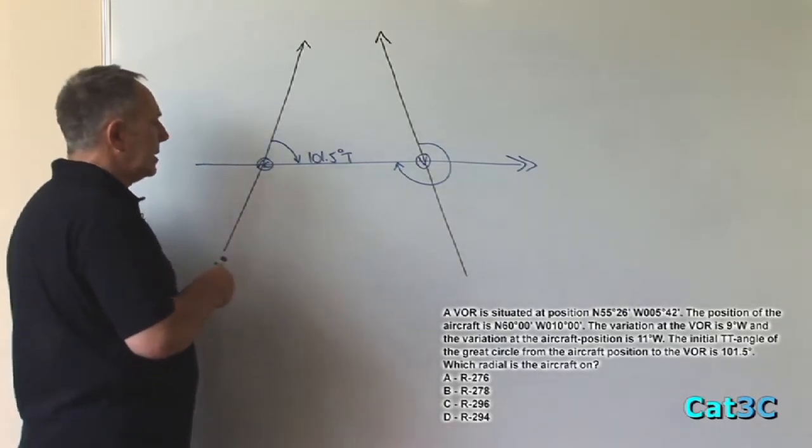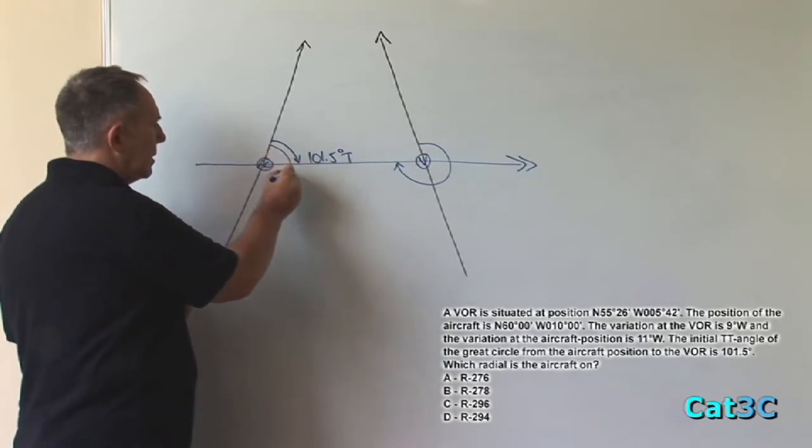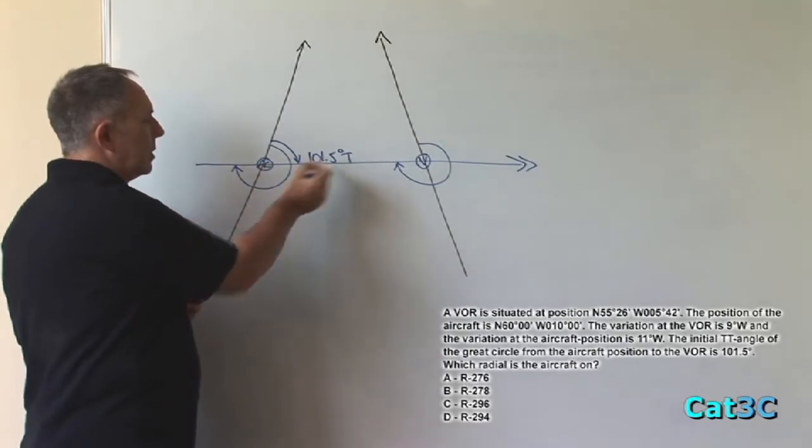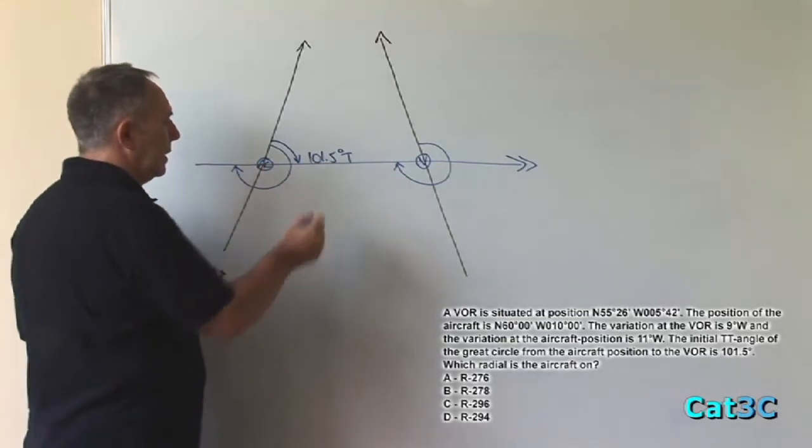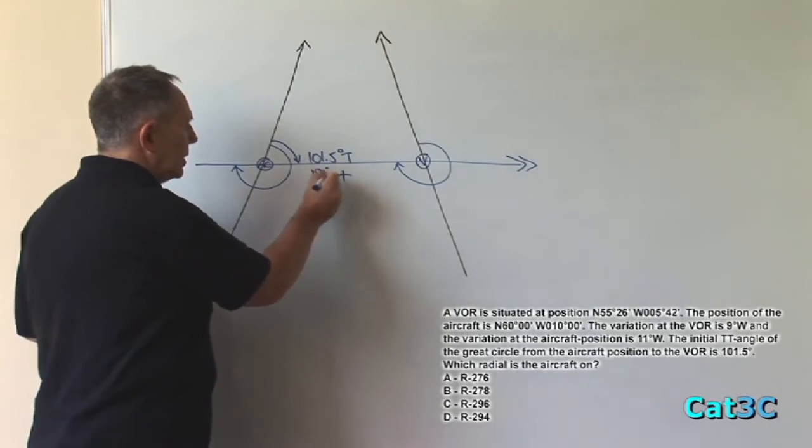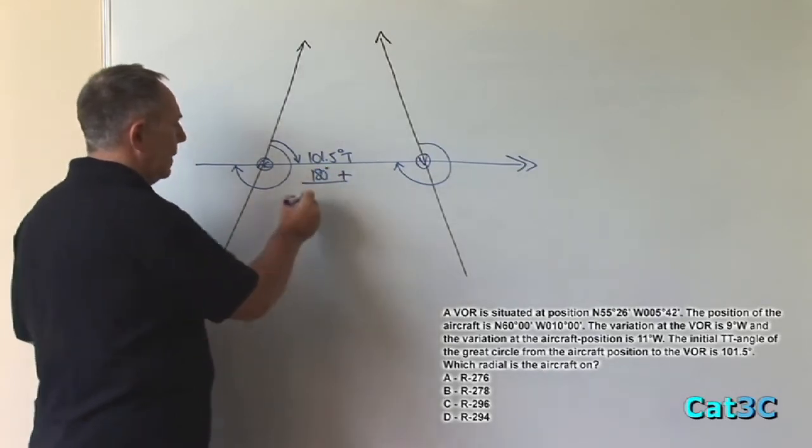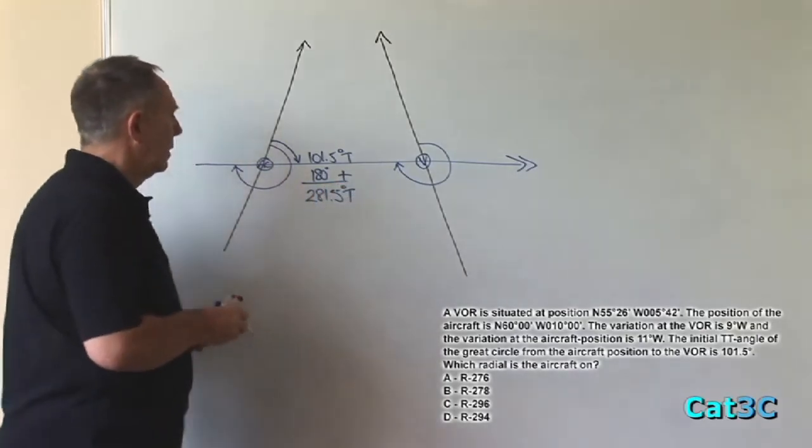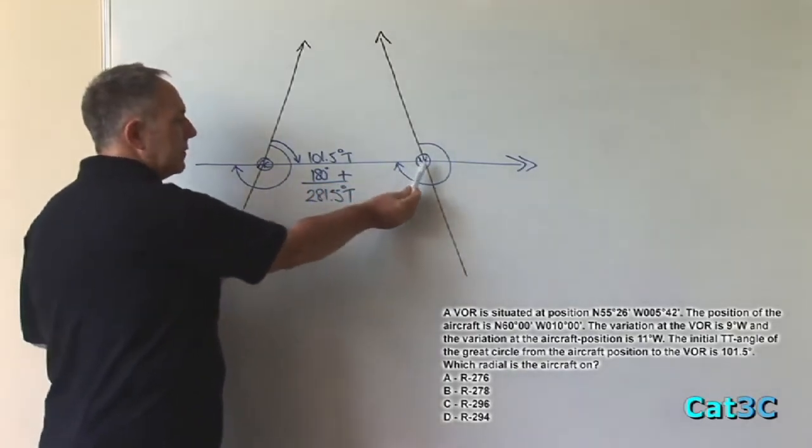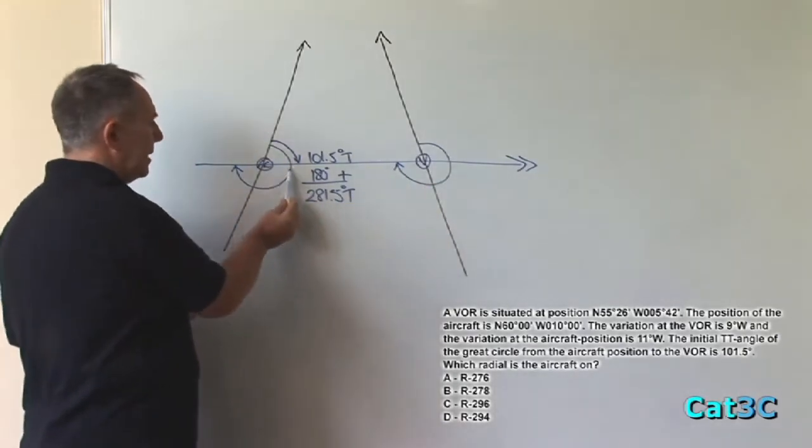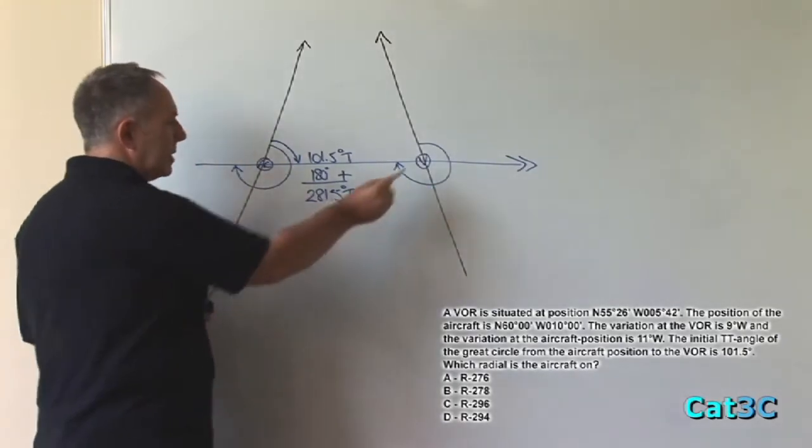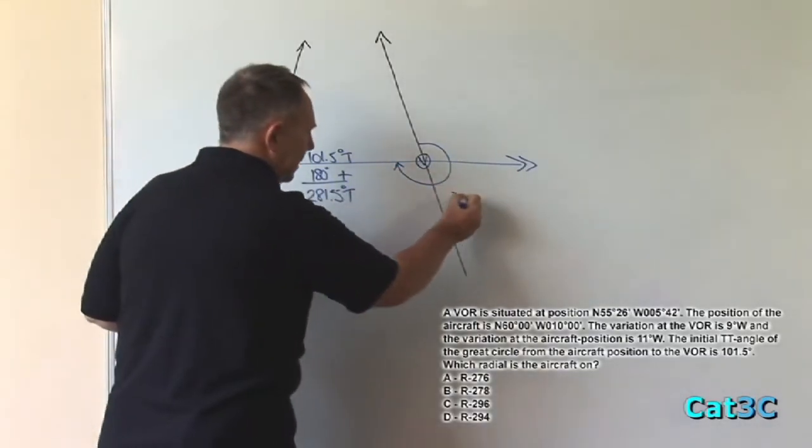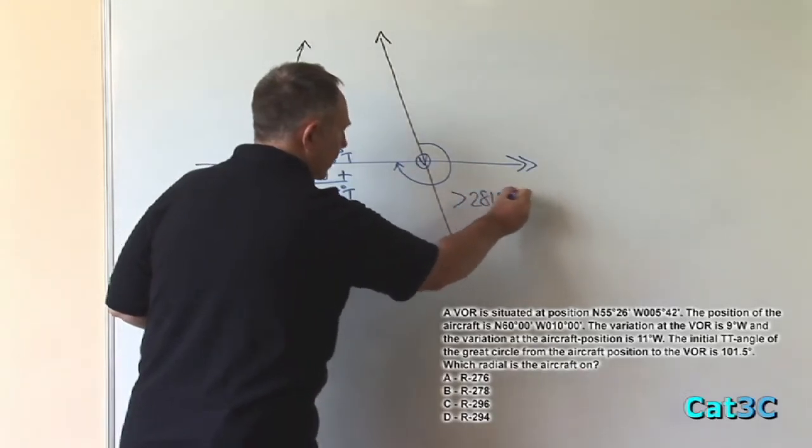Simplest way of doing that is first of all to calculate the back bearing at the aircraft position. And that is the simple reciprocal of 101.5. We add 180 degrees to 101.5 and that gives me 281.5 degrees true. Now observe the size of the angle at the VOR compared to the angle at the aircraft. We can see that the angle at the VOR is greater than the angle at the aircraft, meaning this angle is greater than 281.5 degrees true.